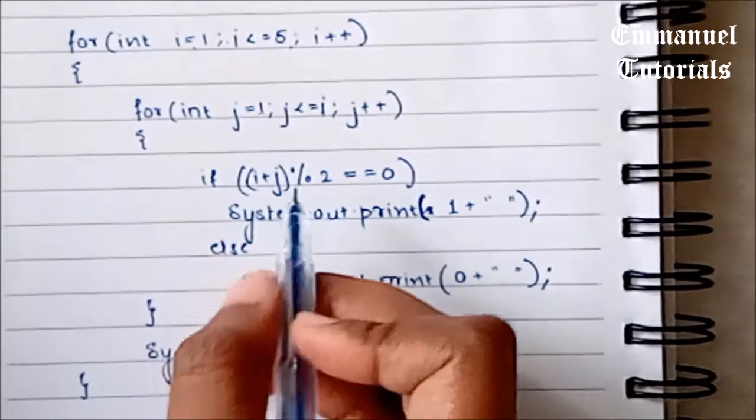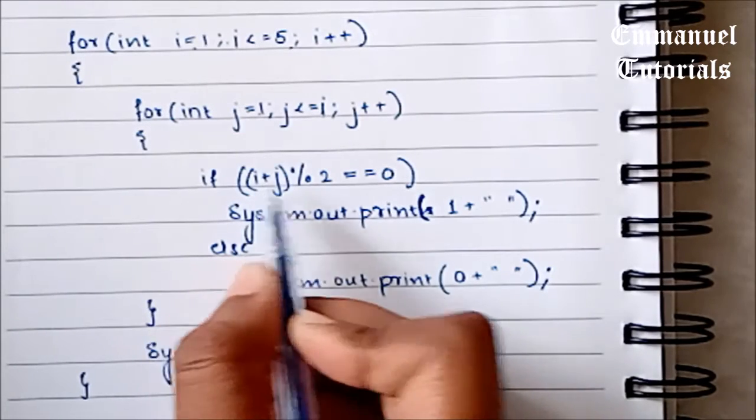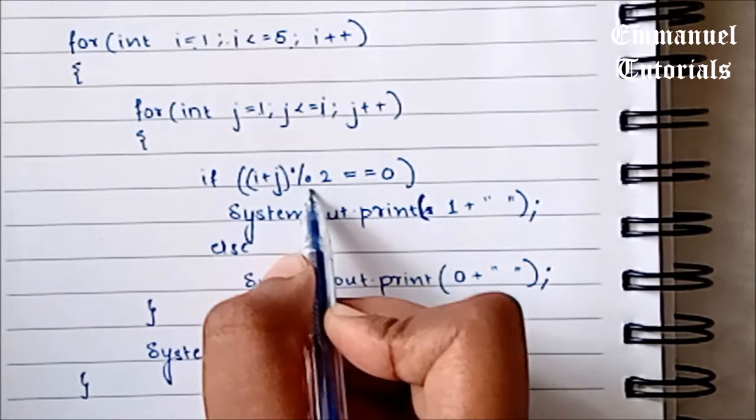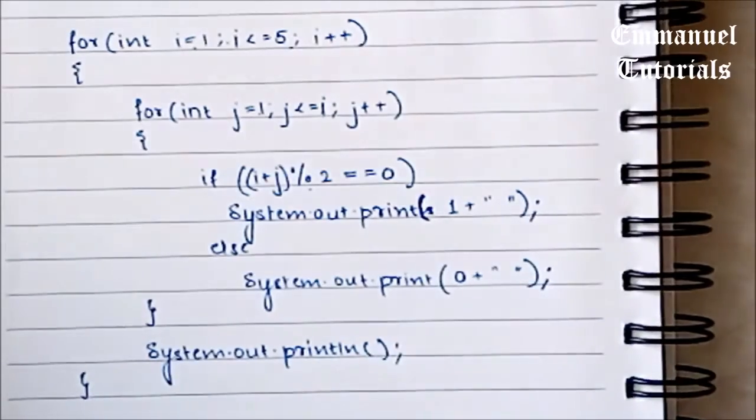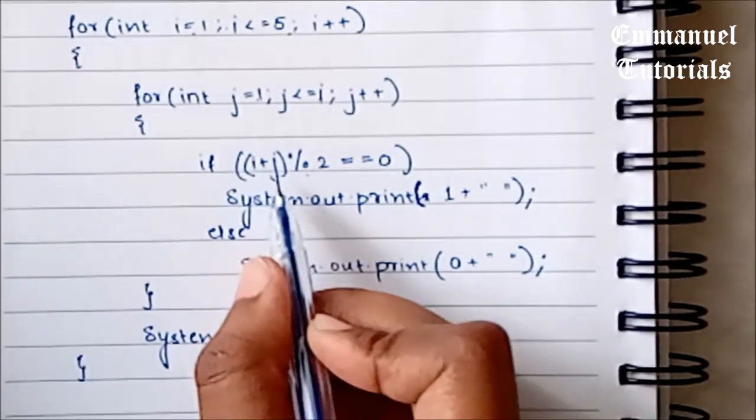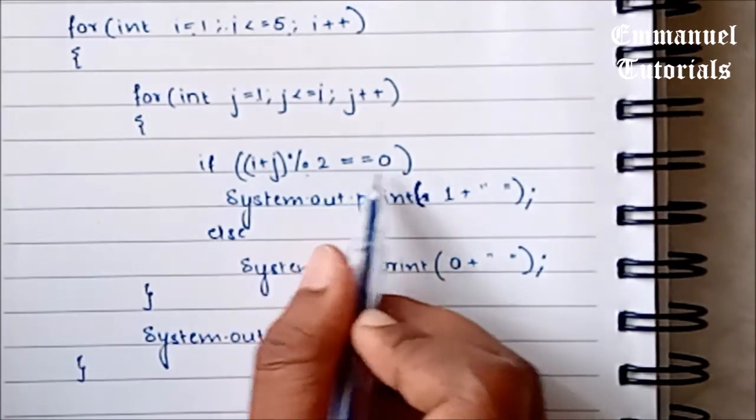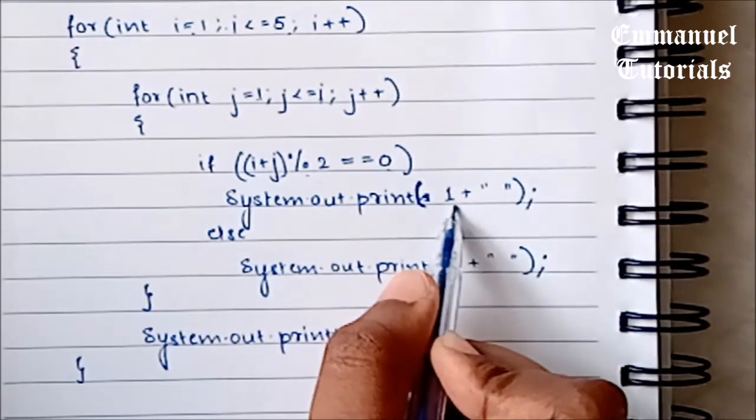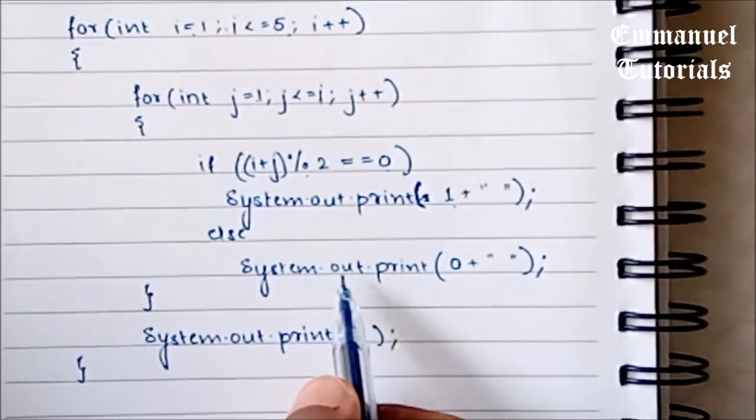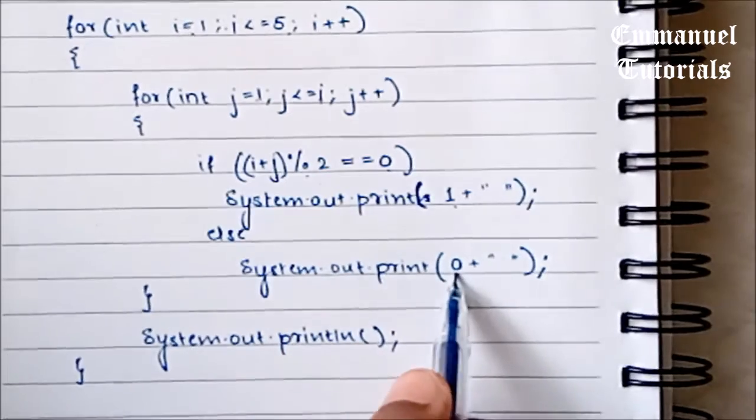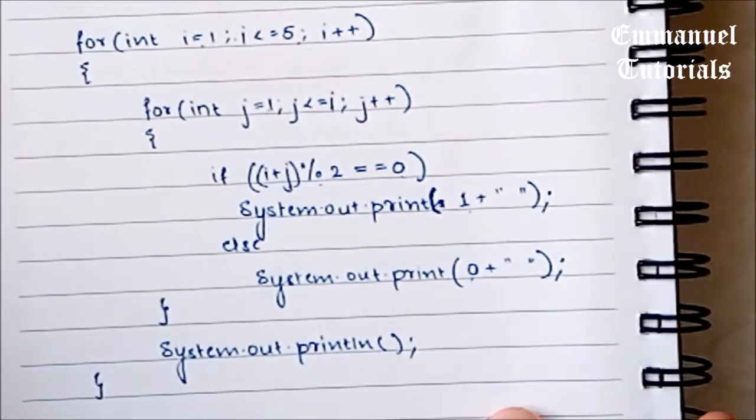So how did we determine it? We simply added the row number and the column number, divided it by 2 and found the remainder. So if the sum of i plus j modulus 2 is equal to 0, we printed 1. And if it is 1, we printed 0. That is what we have written.